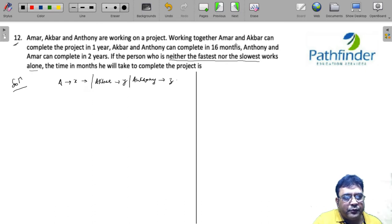So what is given? Working together, Akbar and Amar can complete in one year. Since some of these units are years and some are months, I will convert everything into months. So one year will be written as 12 months. So I can write 1 by X plus 1 by Y is equal to 1 by 12. That is my first equation.